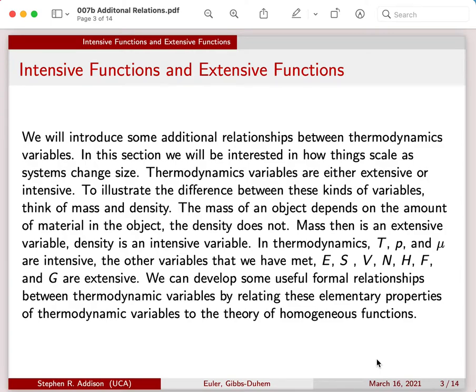The intensive variables in thermal physics are T, P, and μ - temperature, pressure, and chemical potential. The other variables we've met - E, S, V, N, H, F, and G - energy, entropy, volume, number of particles, enthalpy, Helmholtz free energy, and Gibbs free energy - those are extensive.